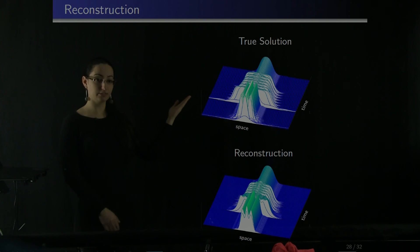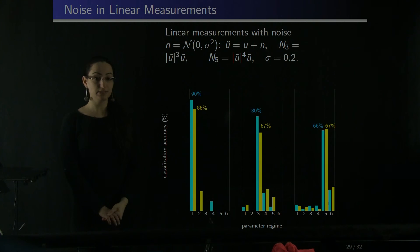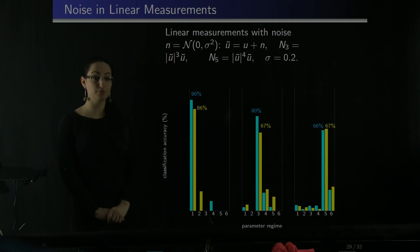In practice, it's usually impossible to take clean measurements. Measurements usually have Gaussian noise in them. So we'll assume we have noisy measurement U_tilde, and then we'll do classification with cubic and quintic nonlinear library mode to achieve good accuracy. You'll see here that mostly the regimes were classified correctly. And it's worth mentioning that nonlinear library modes do classification much better than if you choose a linear library mode.